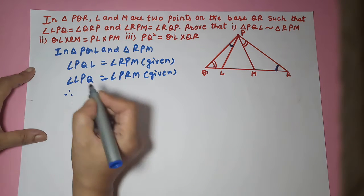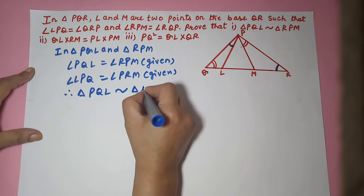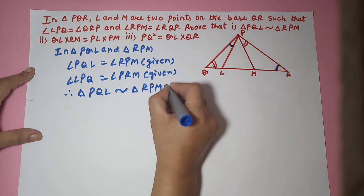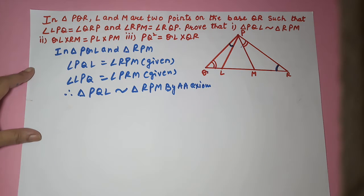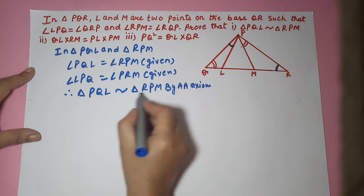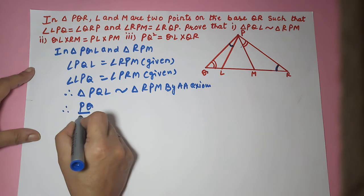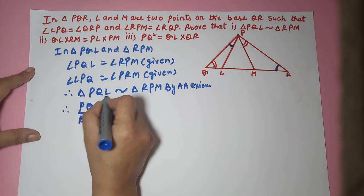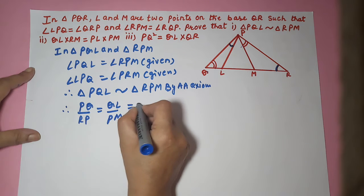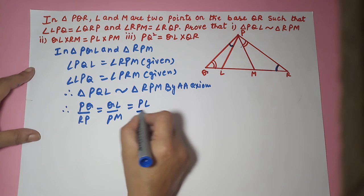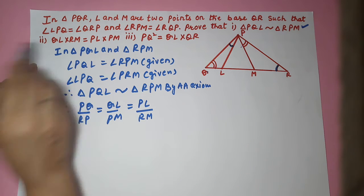Therefore, triangle PQL is similar to triangle RPM by AA axiom. When two triangles are similar, their corresponding sides are proportional. Therefore, PQ/RP = QL/PM = PL/RM.